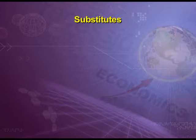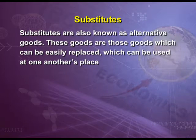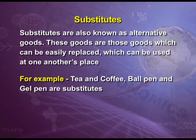The second case is of substitutes, also known as alternative goods. These goods can be easily replaced and used in one another's place. Examples: tea and coffee, ball pen and gel pen. If tea is cheaper and we demand 4 cups of tea daily, but if the rate of coffee falls, our demand for tea will also fall and shift to coffee. This shows that the price of coffee and demand of tea are directly related — as the price of coffee falls, the demand of tea also falls.